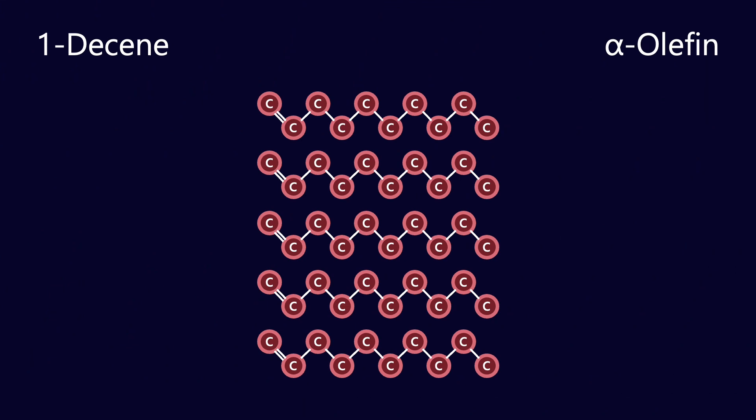In a previous video we covered the fact that polyalpha olefins are made from alpha olefins. In this case I'm showing five one-decene molecules. I'm calling them one-decene because there's a double carbon bond on the first carbon-carbon. That's what gives them the name alpha olefin - an olefin being a carbon chain with a single double bond.